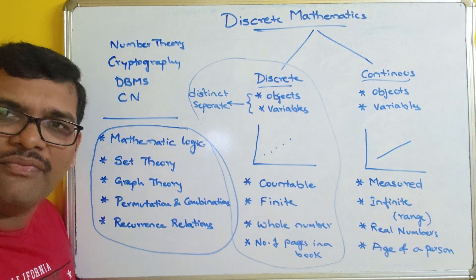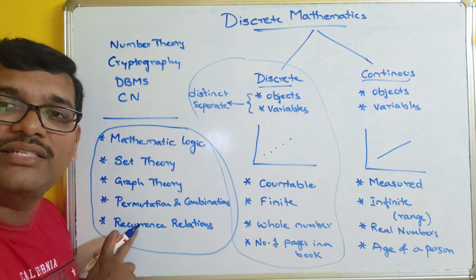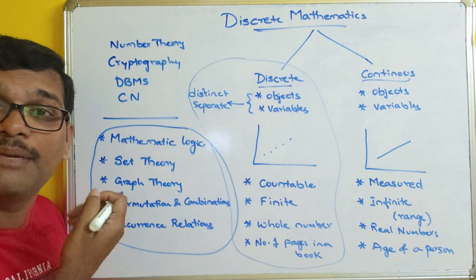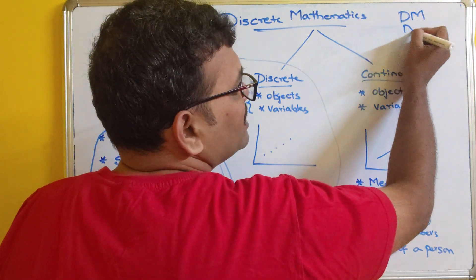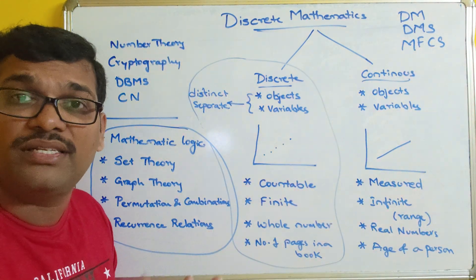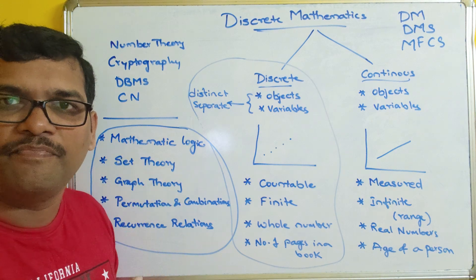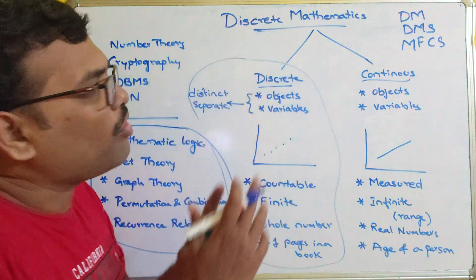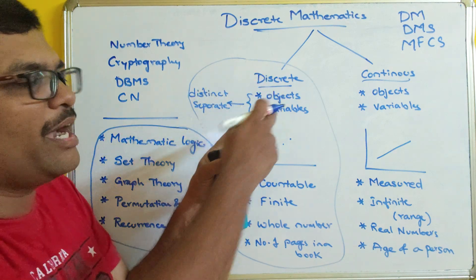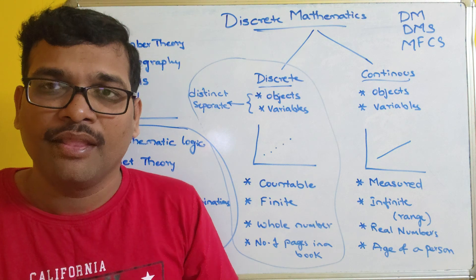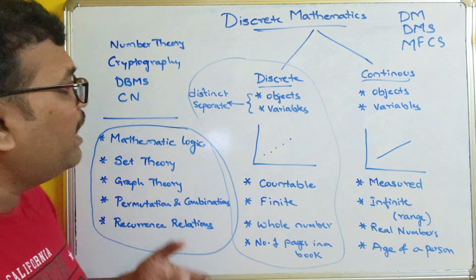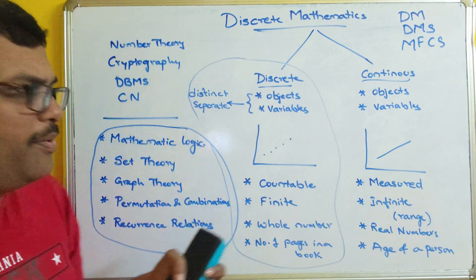All these concepts will be used in computer science and engineering subjects. Whatever subject you study in CS, every subject directly or indirectly uses these concepts. These are the different structures that follow discrete mathematics, which is why the subject is called either discrete mathematics, discrete mathematical structures, mathematical foundations, or mathematical foundation for computer science — the name differs by university but the concepts are the same.